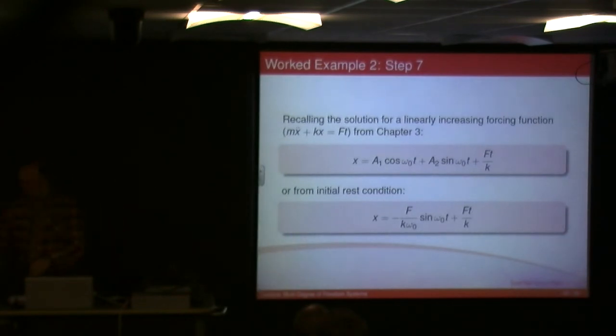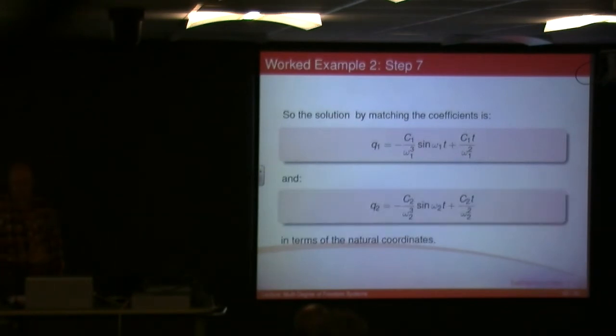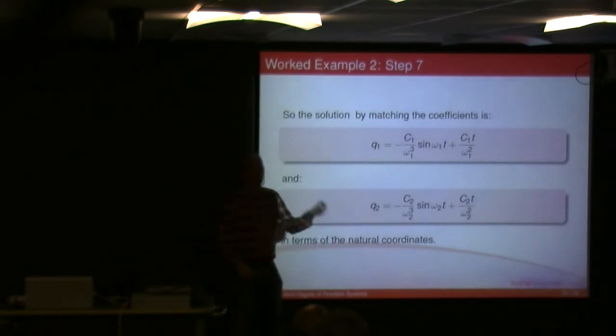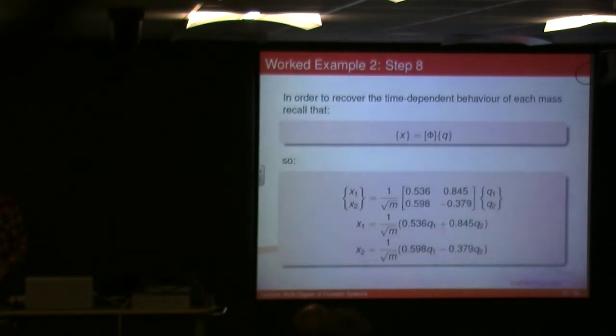We can find that Q1 is going to be this, and then Q2 will be that, in terms of our natural coordinates. So we've got two equations for Q1 and Q2. You can then apply the conversion in step 8, which is that, to get back to x1 and x2.